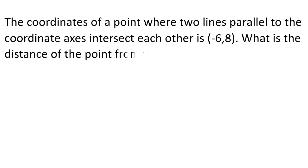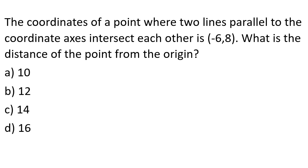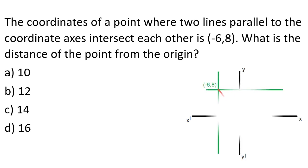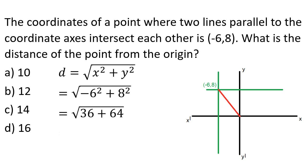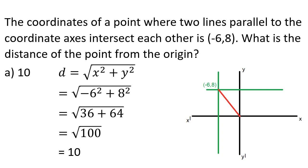The coordinate of the point where two lines parallel to the coordinate axes intersect each other is (-6, 8). What is the distance from the origin? Distance = √(x² + y²) = √[(-6)² + 8²] = √[36 + 64] = √100 = 10. That distance is 10. Option A.